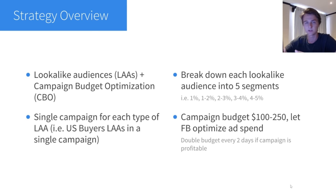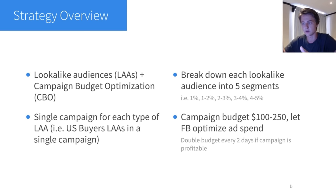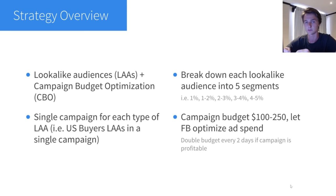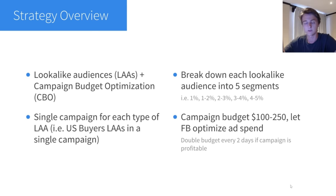You don't have to use 1% increments — you can also do 2% increments, so 2%, 2–4%, 4–6%, 6–8%, and 8–10%, if you're targeting a country with a smaller population and want bigger audiences. The general idea is to break each lookalike audience into five segments, put them into a single campaign, turn on CBO, and set a budget of about $100 to $250 to start. Let it run and optimize. Every two days, if the campaign is profitable, double the budget to get the most out of it.